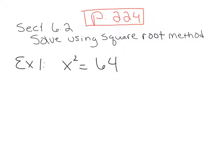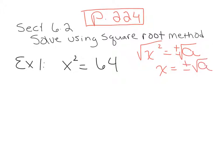The square root method is based on the principle that if x squared equals some number, you can square root both sides. That square root on a number generates a positive and negative sign, and x will equal the positive or negative square root of whatever that number is. We're going to apply that principle here.